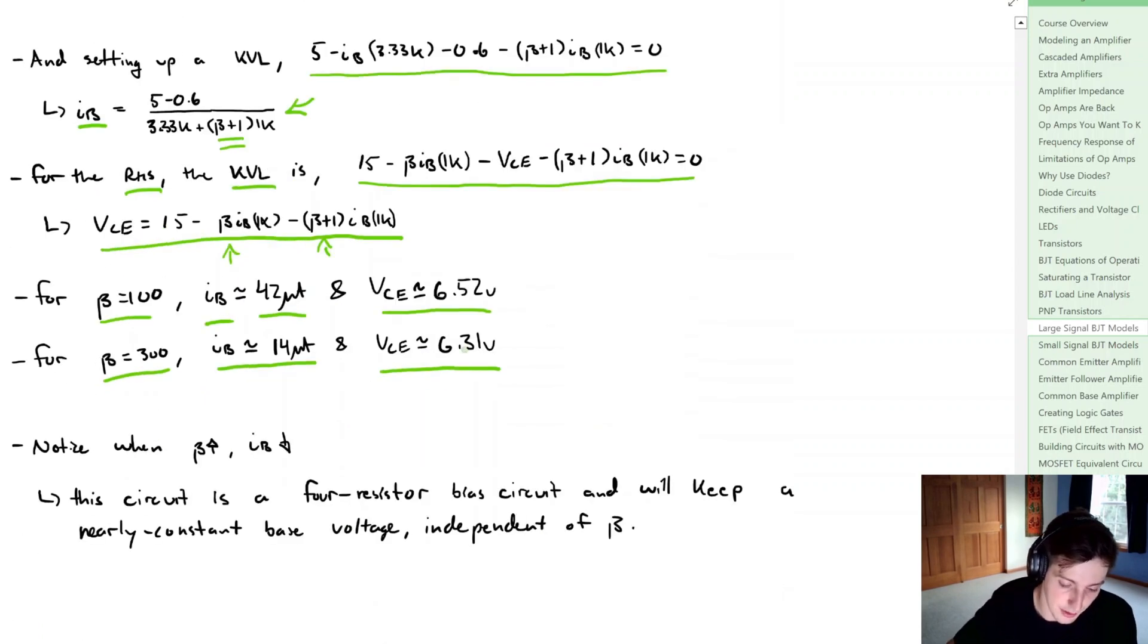What we can notice from this is that when beta increases, our base current decreases and VCE is pretty constant per se. Now this isn't unintentional.